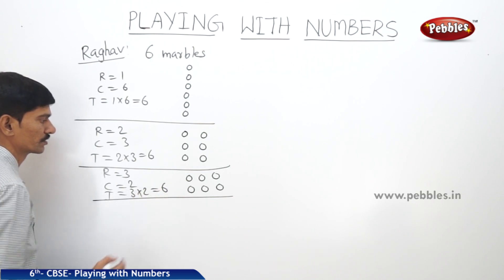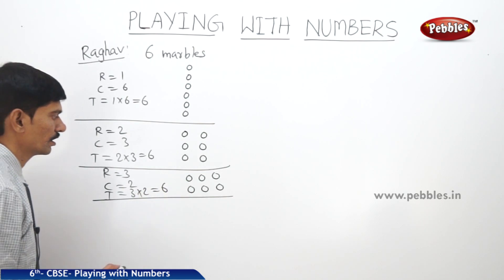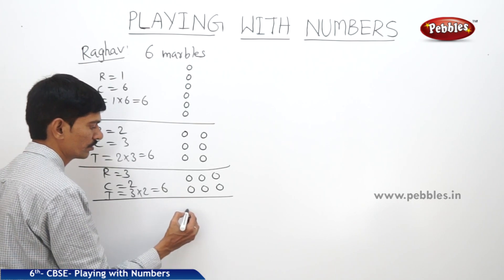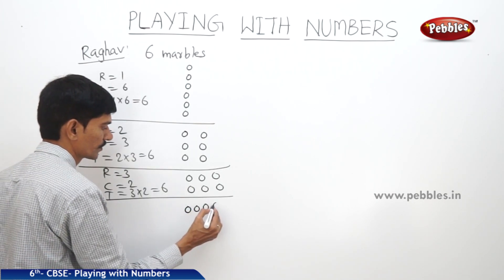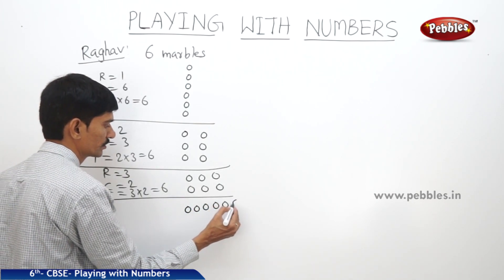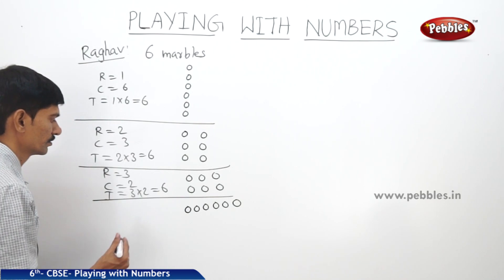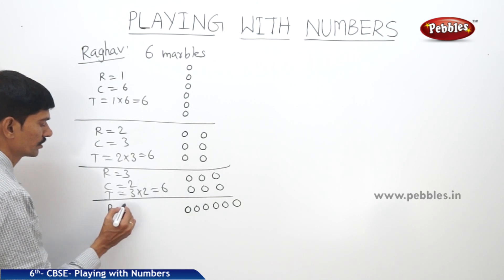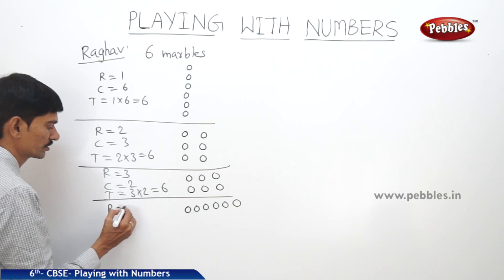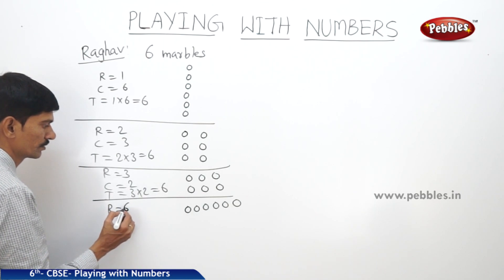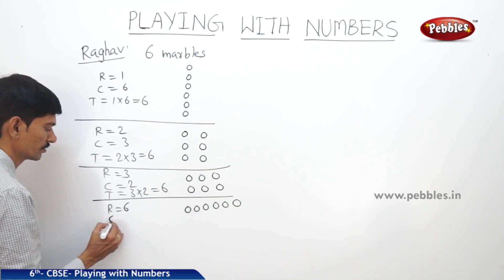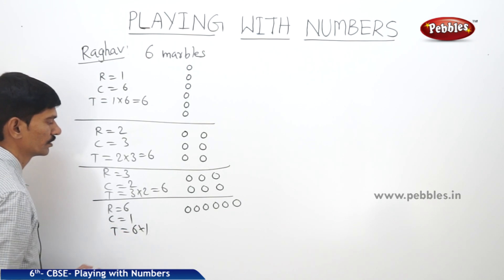The total number of marbles is three into two, which equals six. He can also arrange all six marbles in only one row: one, two, three, four, five, six. The number of marbles in the row is six and the number of marbles in each column is one. So the total is six into one.